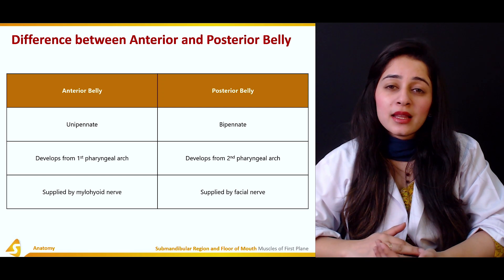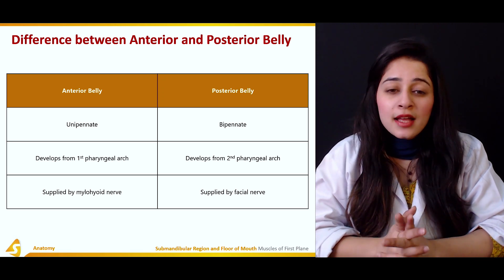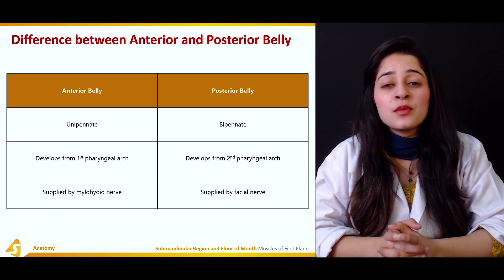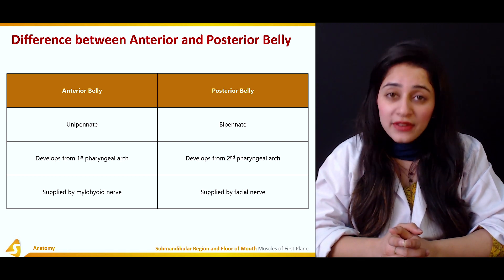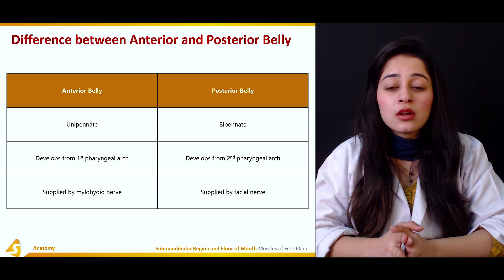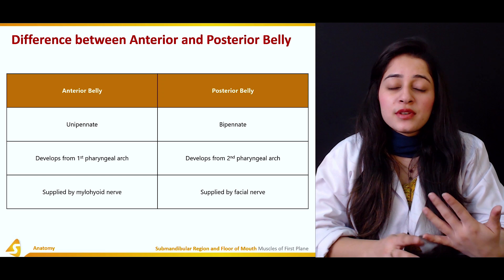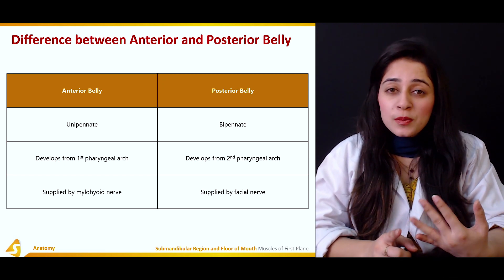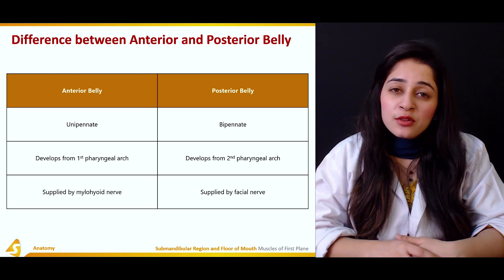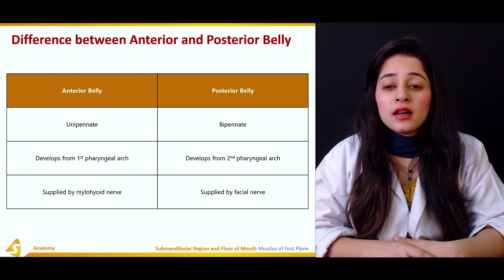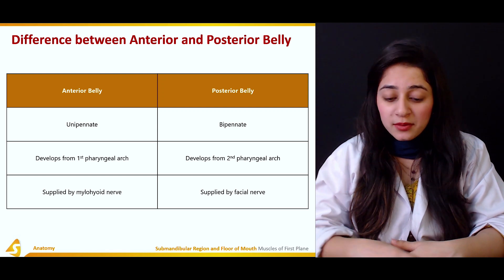The differences between the anterior and posterior bellies: the anterior belly is unipinnate while the posterior belly is bipinnate in fiber arrangement. The anterior belly develops from the first pharyngeal arch and is supplied by the mylohyoid nerve. The posterior belly develops from the second pharyngeal arch and is supplied by the facial nerve.